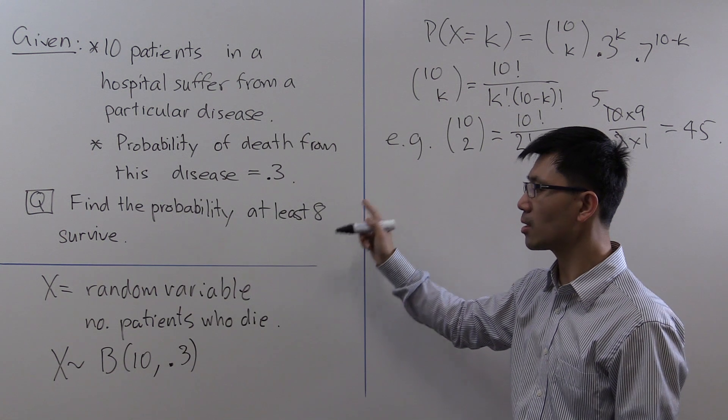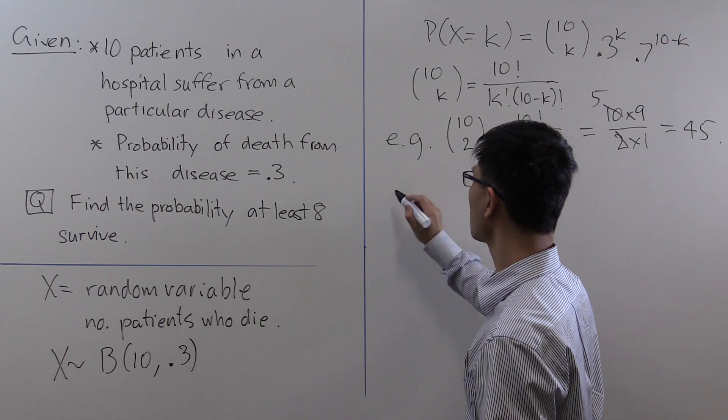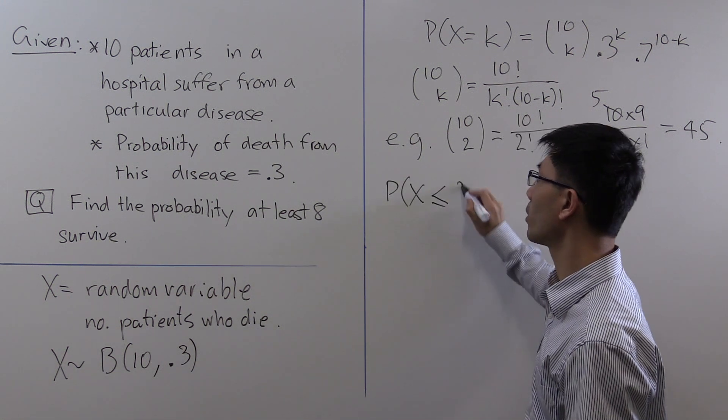That means that at most 2 die. Remember there are 10 patients in this hospital. So what we want is the probability that X is less than or equal to 2.